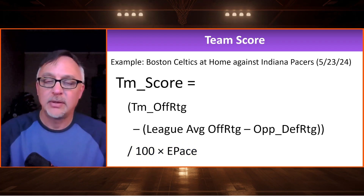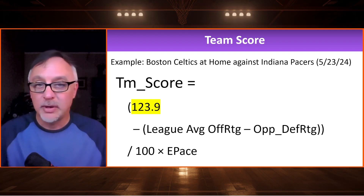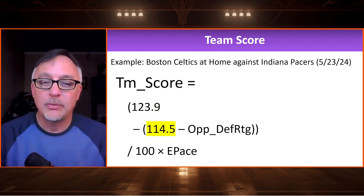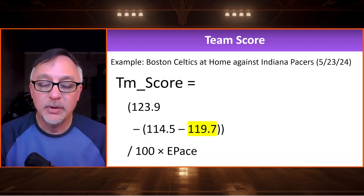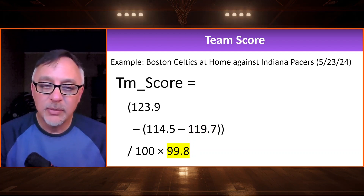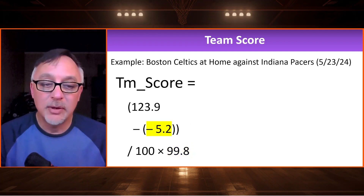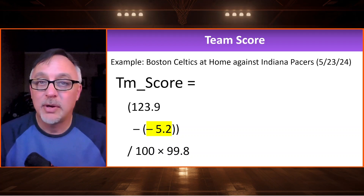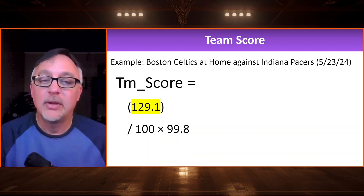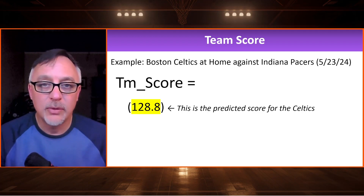Let's look at an actual example. The Boston Celtics' offensive rating at home is 123.9. The league average is 114.5. The Pacers' defensive rating on the road is 119.7. The expected pace is 99.8 — almost 100 possessions. Within the parentheses: 114.5 minus 119.7 gives a negative number, meaning since we subtract it, we add it to the team offensive rating. So 123.9 plus 5.2 is 129.1. Divide by 100, multiply by 99.8, and we get 128.8 — our predicted score for the Boston Celtics on 5-23-2024 against the Pacers.